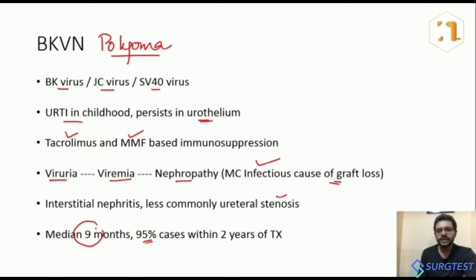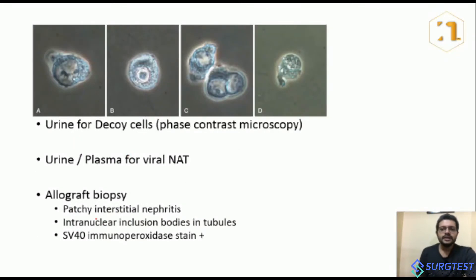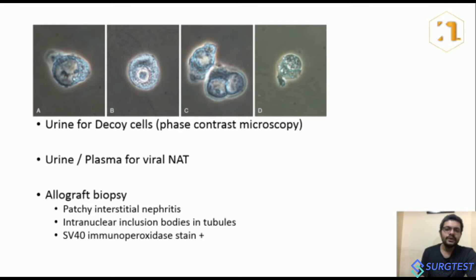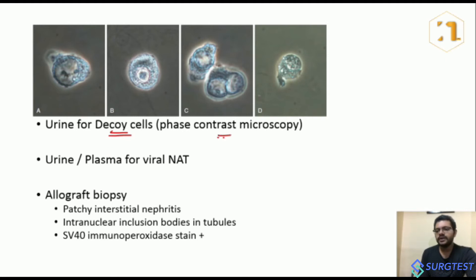To diagnose BK virus, the first step is checking for viruria — nucleic acid testing in the urine to detect BK virus. In resource-limited settings where nucleic acid testing is not available, you can look for decoy cells in the urine. Decoy cells are an important MCQ point. They are not seen under normal light microscopy; they are seen under phase contrast microscopy. There are four phenotypes of decoy cells described.